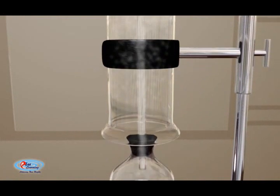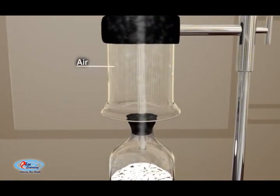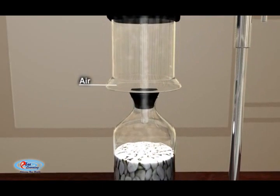Ammonia forms dense fumes of ammonium chloride when brought into contact with fumes of hydrogen chloride from concentrated hydrochloric acid.